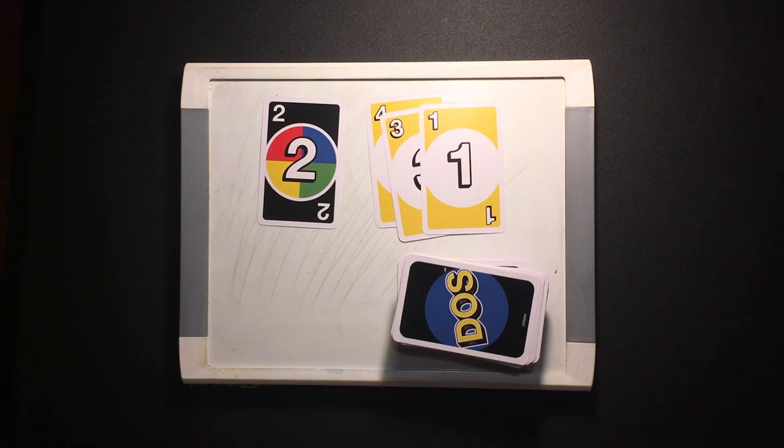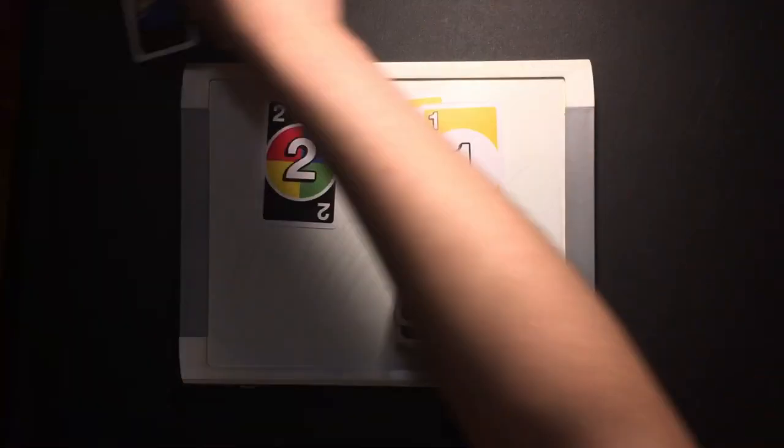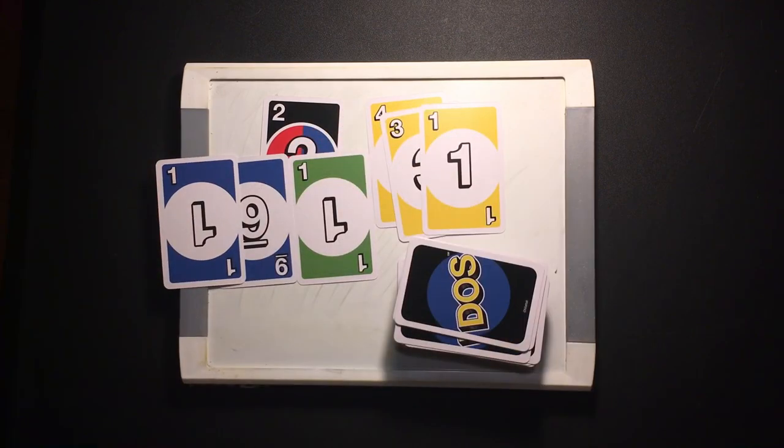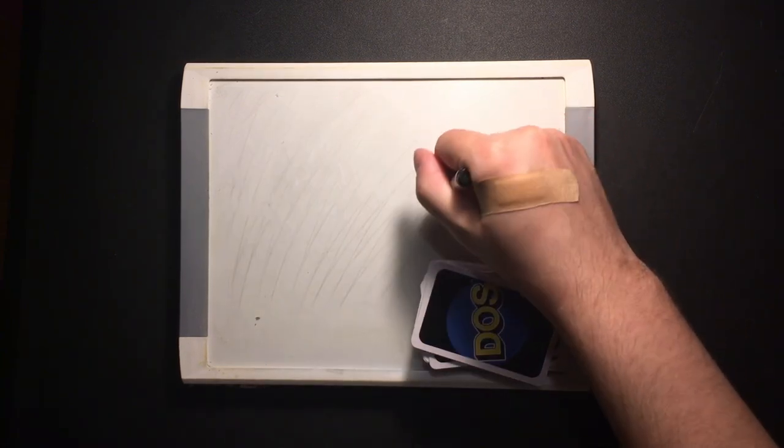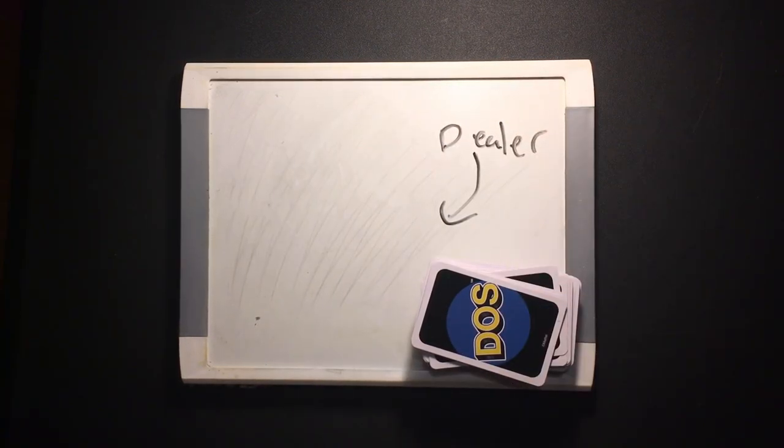They are then awarded points for all of the cards left in their opponent's hands, including any cards they must draw due to a double color match bonus. Whomsoever won this round shall be the dealer in the next round of DOS.